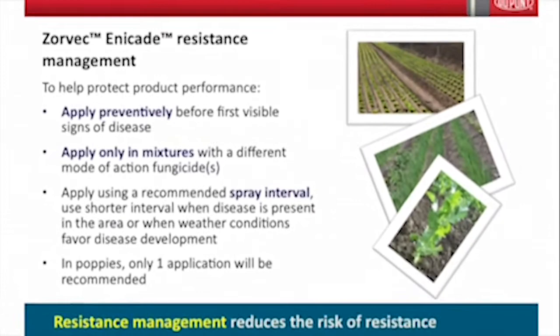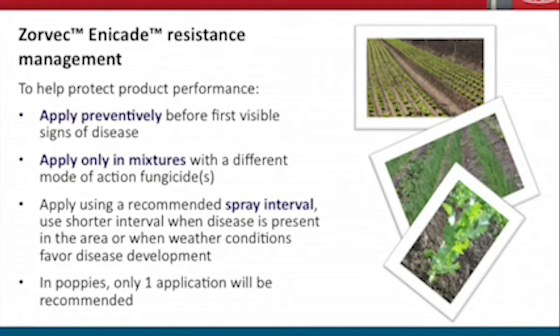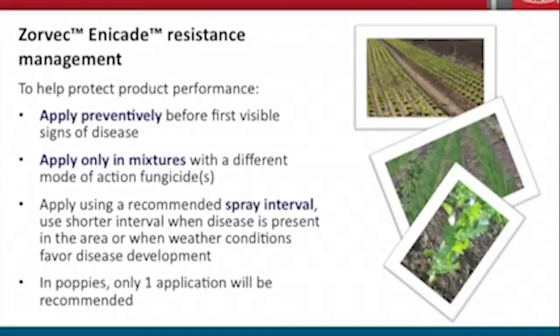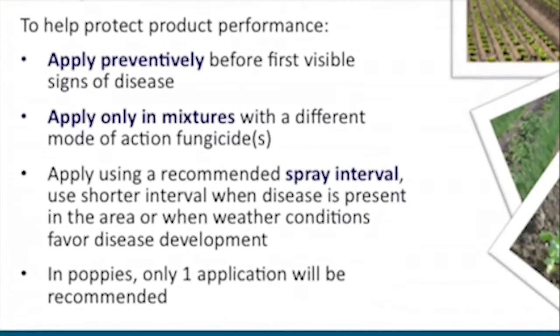We end up with a high-risk fungicide and a high-risk pathogen, which means we need to think carefully about how we manage and rotate it through other modes of action. Key strategies include preventative spraying — not spraying when disease is already sporulating and active — and not applying it to existing infections. The label requires tank mixing with another mode of action, with mancozeb being the primary recommendation.